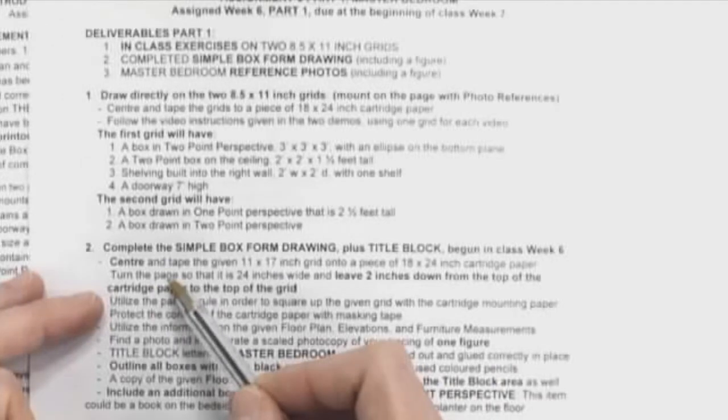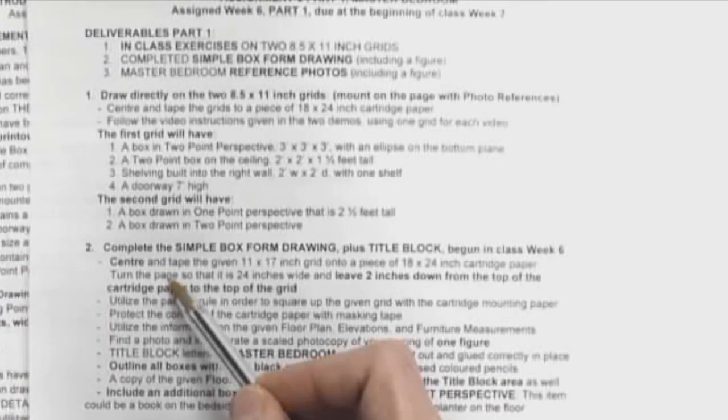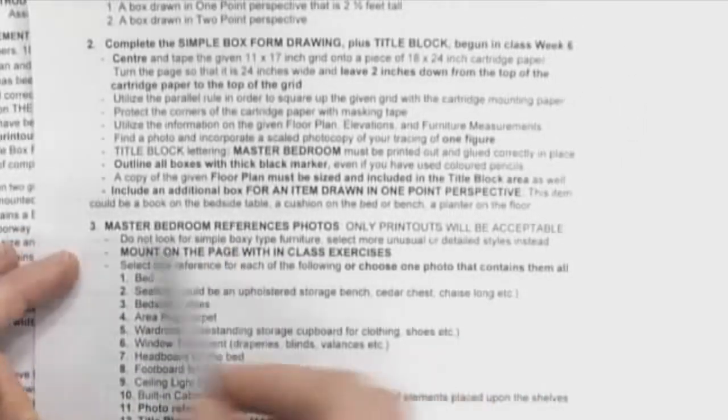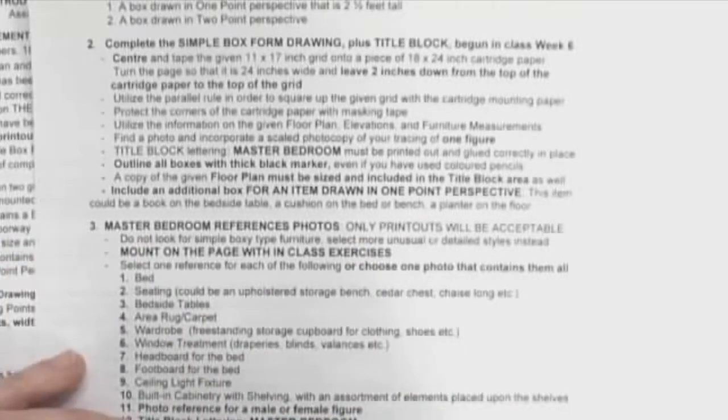They're meant to go rather quickly so that you can get on to the second part, which is making that big box form drawing. I'm going to give you two large grids, and you can use one as backup and one to draw on. Hopefully you can get that done in class today because after that, you need to go and find your master bedroom reference photos. There's a lot to collect this time.